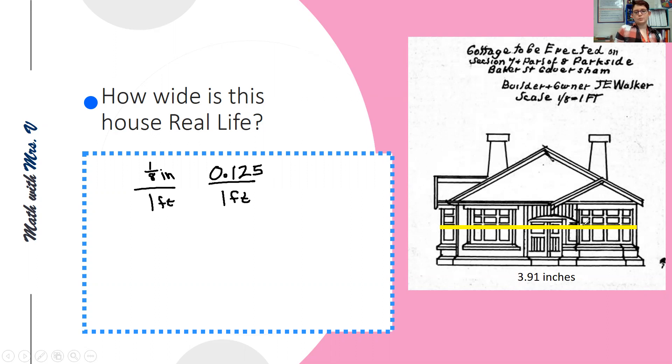And when I measured this picture, I got that it was 3.91 inches. So we want to find out how wide the house was in real life when it was built.